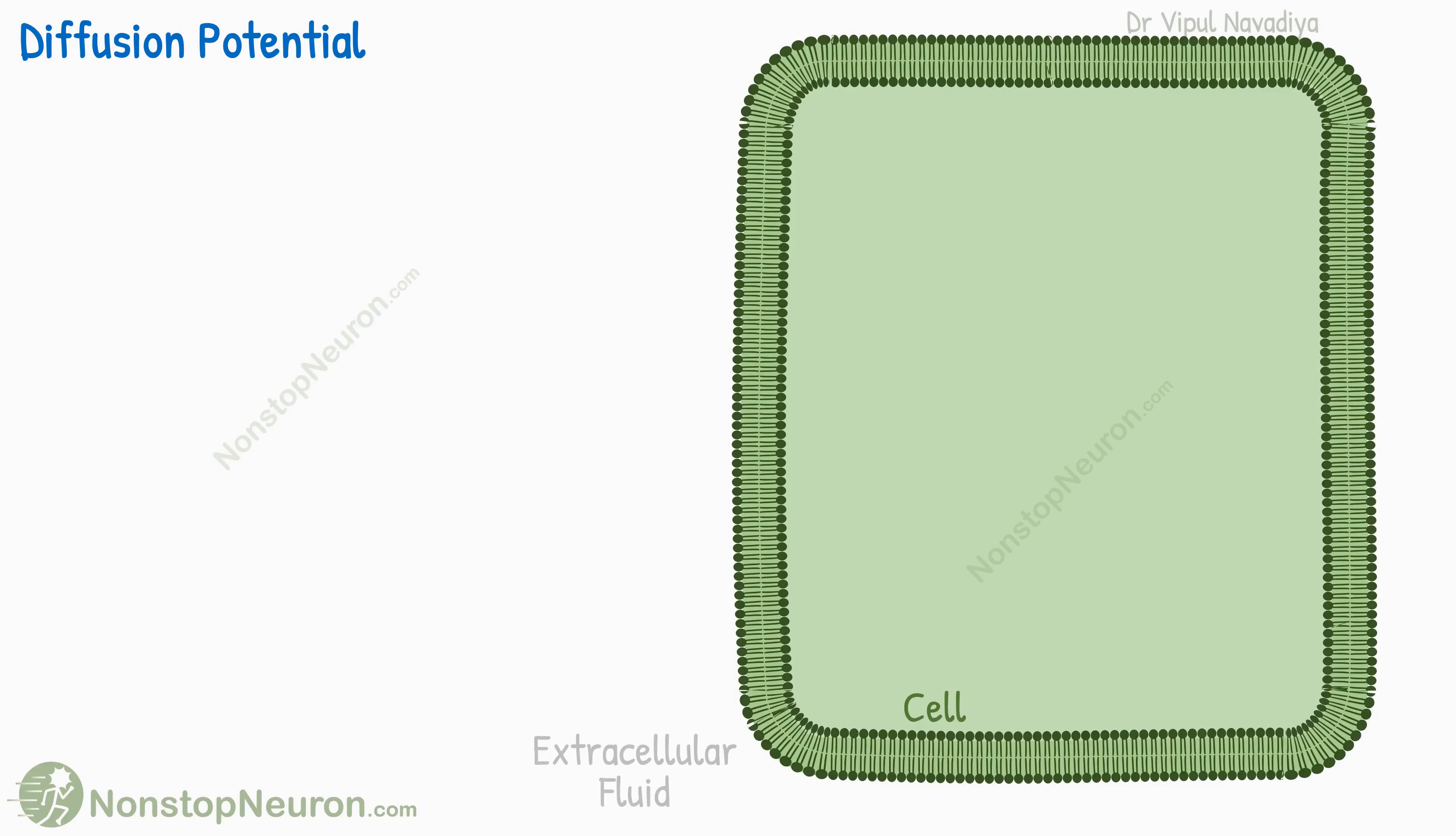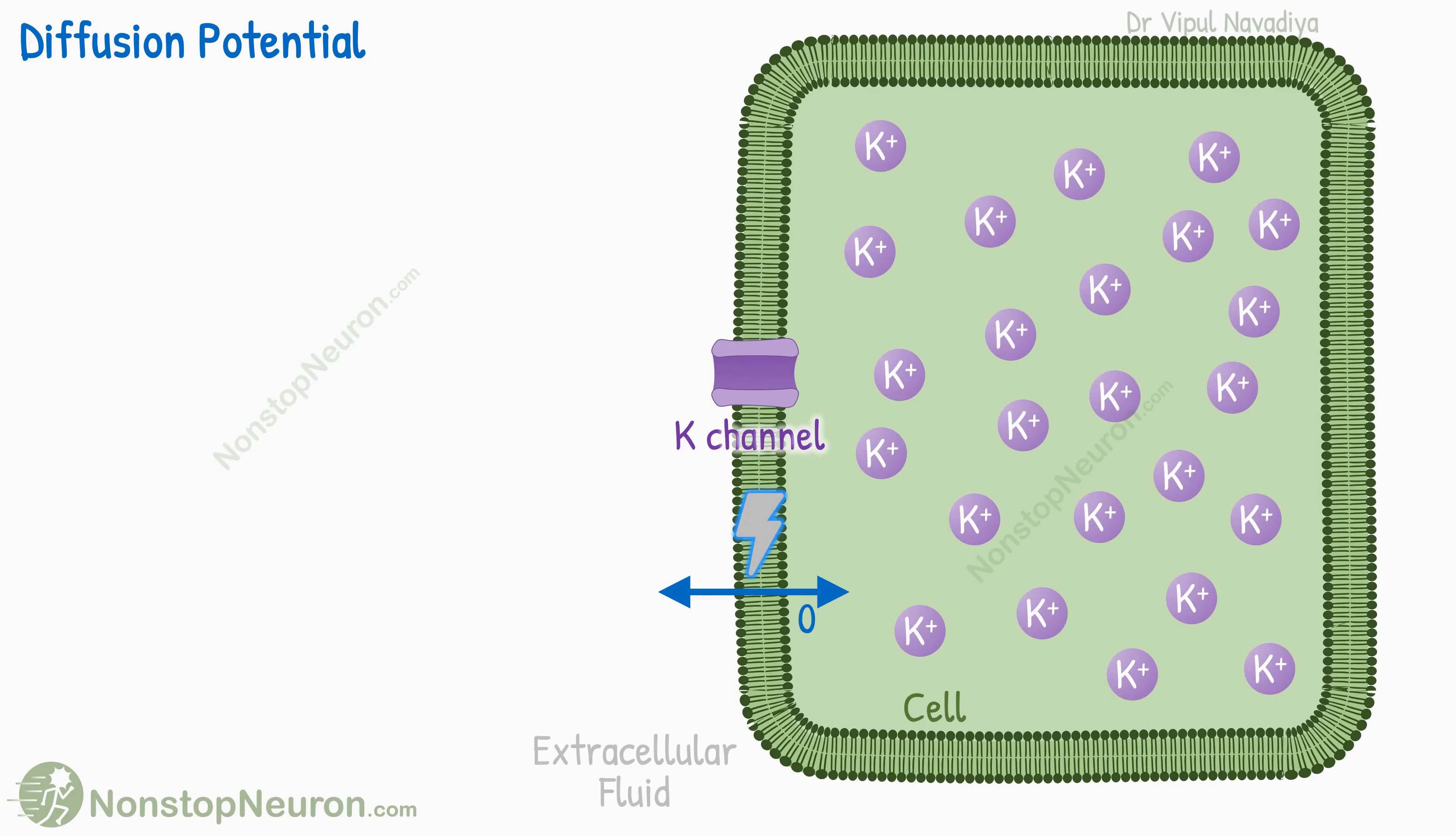Let's take a hypothetical cell that has only potassium channels on the membrane and no other channels. So, it is permeable to potassium only. And the electrical potential across the membrane is zero. Now, the concentration of potassium inside the cell is about 140 mEq per liter.